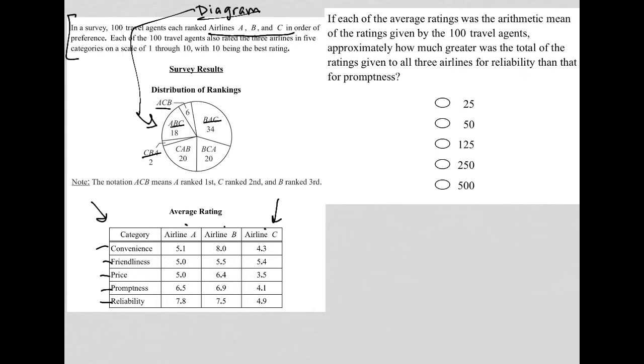approximately how much greater was the total of the ratings given to all three airlines for reliability than that for promptness? So what we have to keep in mind is what's the meaning of the first half of this question? If each of the average ratings was the arithmetic mean of the ratings given by the 100 travel agents.